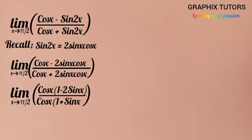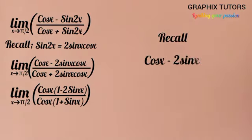I know you might be surprised - how did I get cos x(1 - 2 sin x)? Let me take you down memory lane again. If I have cos x - 2 sin x cos x, if you look at the left side of the negative sign you have only cos x, and if you look at the right side you also have cos x.